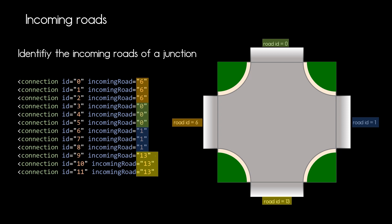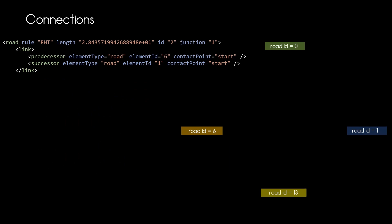For this we have to look into the road definition itself. This road definition is outside the junction, as we learned before. Here we can check out the link element. This contains the information we are looking for: the predecessor and successor of our connecting road.